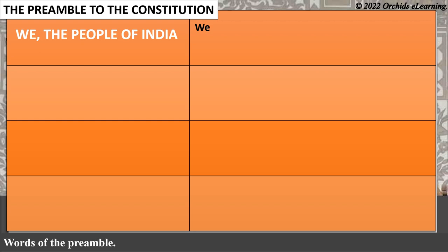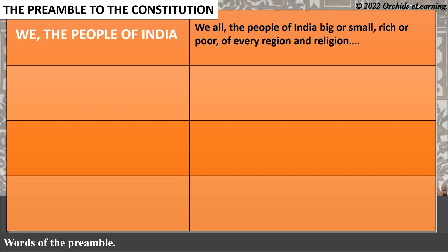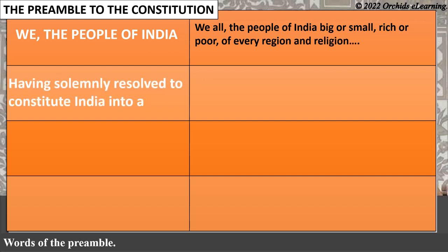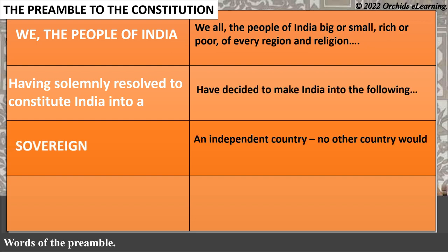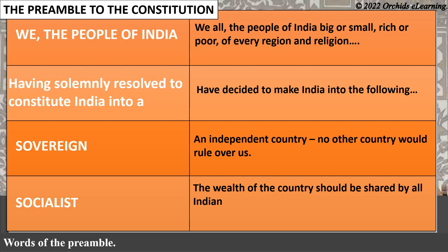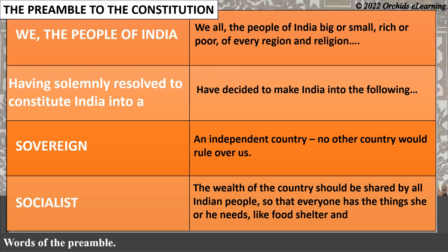We, all the people of India — big or small, rich or poor, of every region and religion — have decided to make India into the following: an independent country where no other country would rule over us. The wealth of the country should be shared by all Indian people, so that everyone has the things they need, like food, shelter, and clothing.